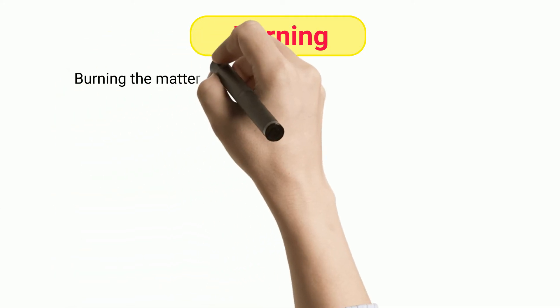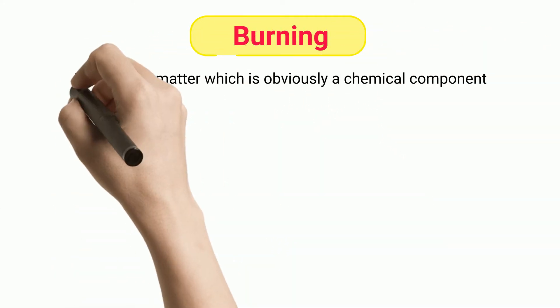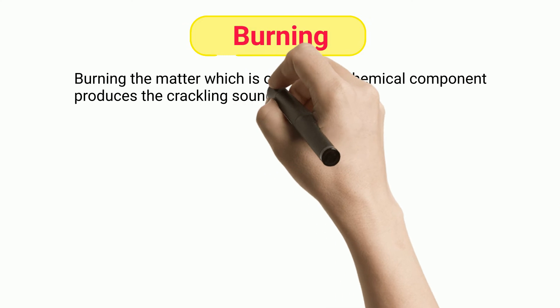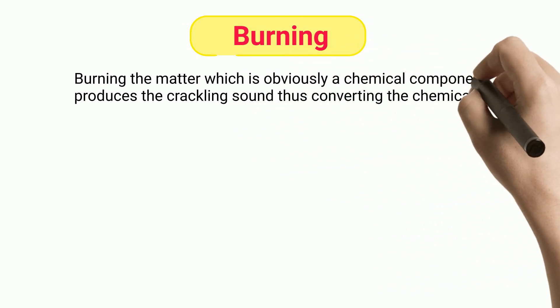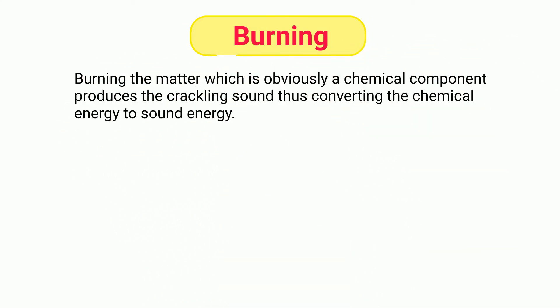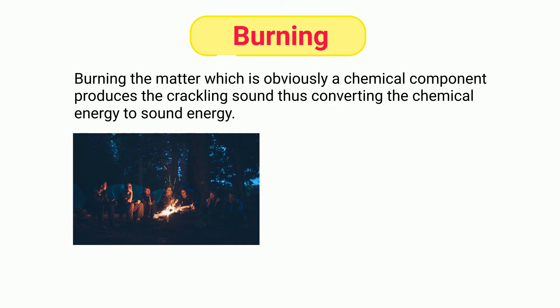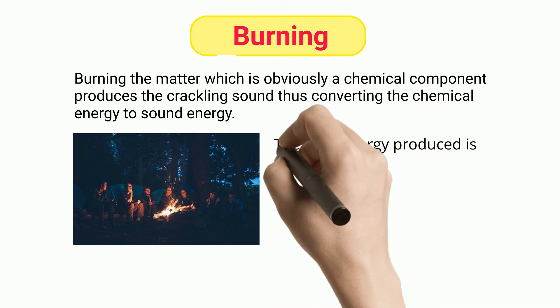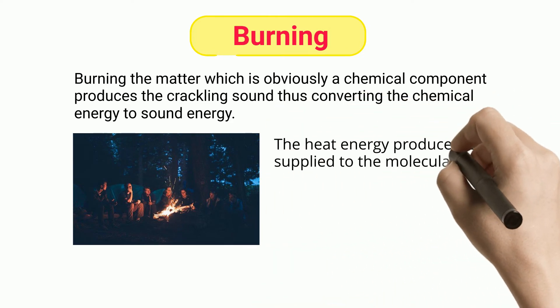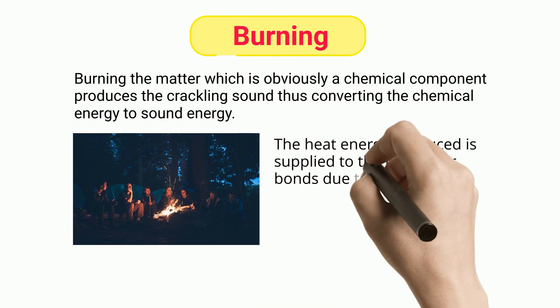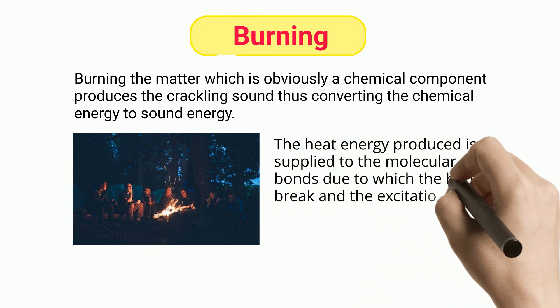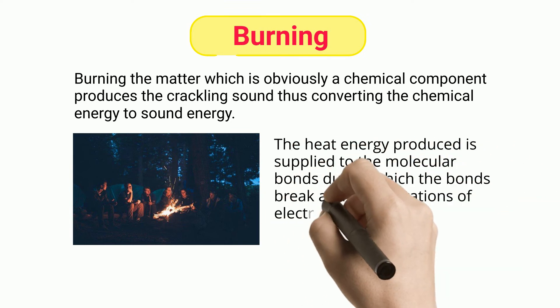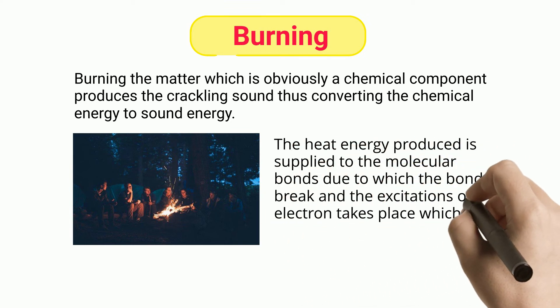Burning: burning matter, which is obviously a chemical component, produces a crackling sound, thus converting chemical energy to sound energy. The heat energy produced is supplied to the molecular bonds, causing the bonds to break and the excitation of electrons to take place, which is seen in the flame.